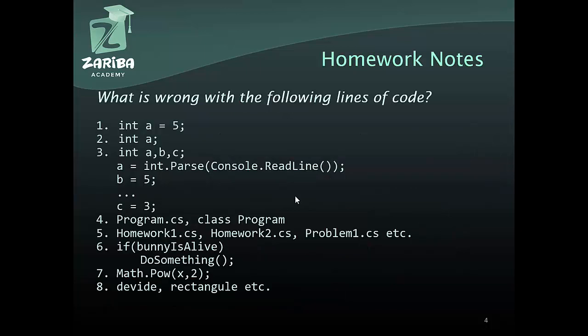Okay, homework notes — tell me what's wrong with the following lines of code. First: single letter naming — 'int a = 5'. What is 'a'? I mean, what problem are you solving? This is only acceptable for quadratic function coefficients where a, b, and c are given in the problem text. But I saw this in many homeworks and it was really bad.